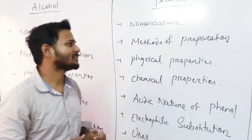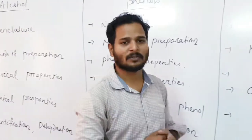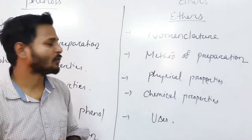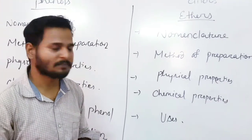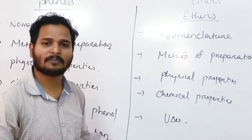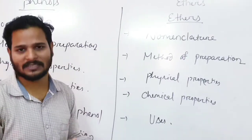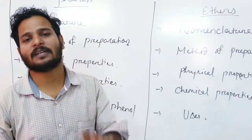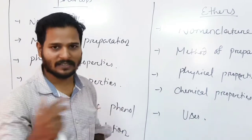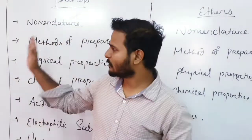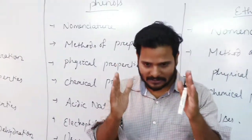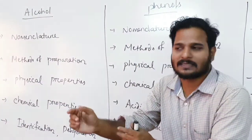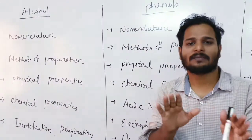The last topic in this chapter is about ether — represented as R-O-R. First we study nomenclature, then method of preparation, physical properties, chemical properties, as well as uses. So these three topics are called alcohol, phenol, and ether. We focus on nomenclature, physical properties, chemical properties, special characteristics, uses, and chemical reactions.